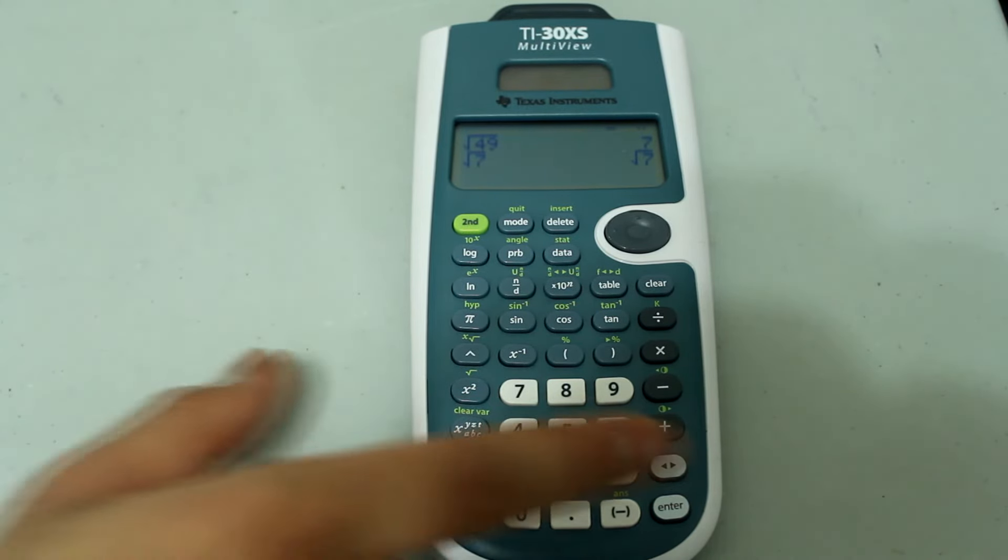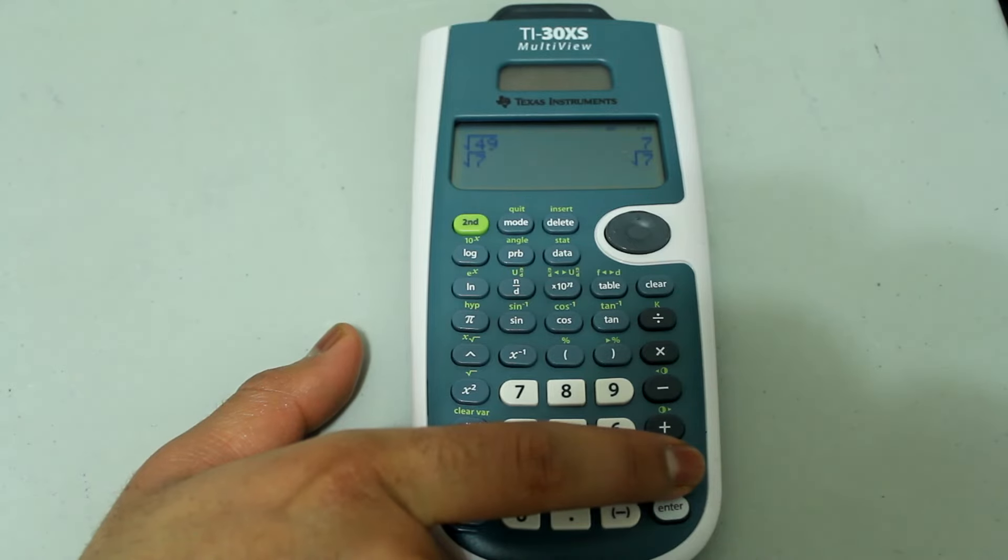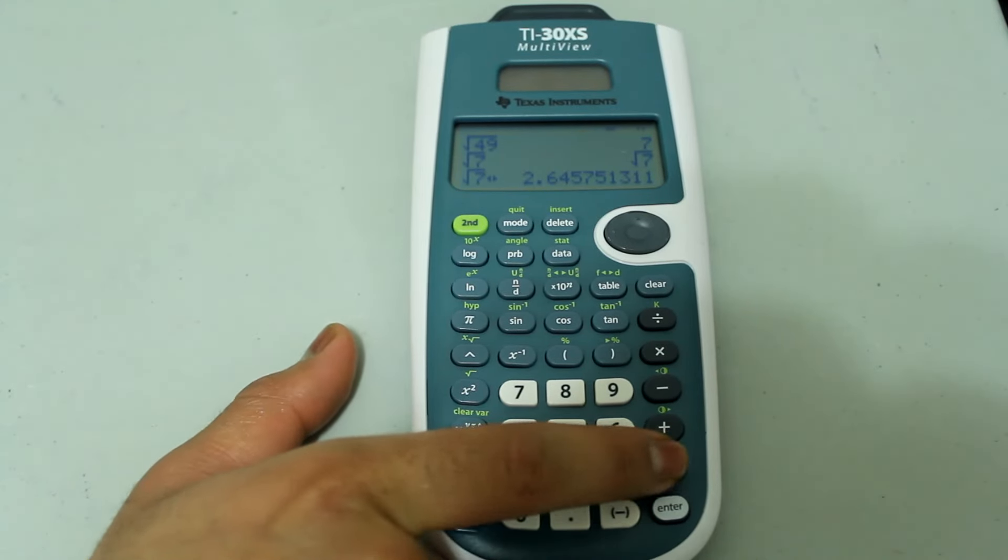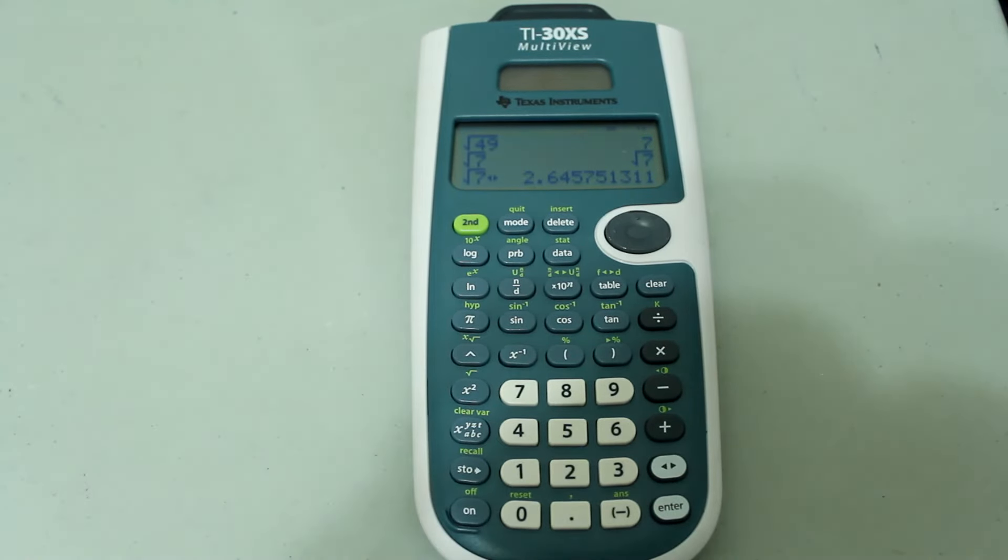To get it in decimal form all I need to do is press this toggle key and the answer will show up in decimal form.